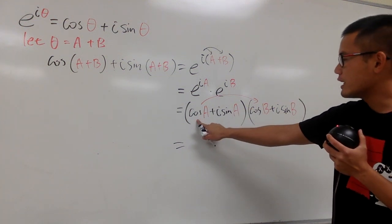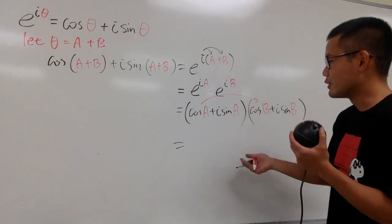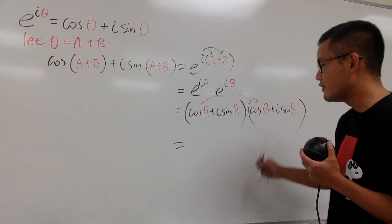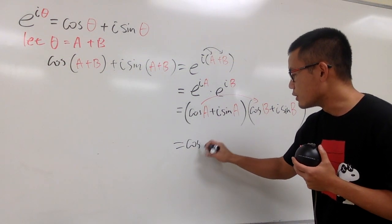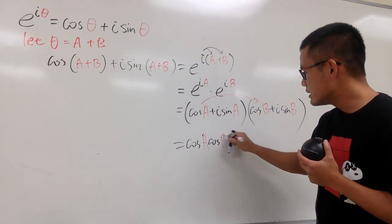First of all, you see, cosine a times cosine b, this is just how it is. We cannot do anything too much. It's not cosine squared, because angles are different. So, let me write this down as cosine a times cosine b, just like how it is.